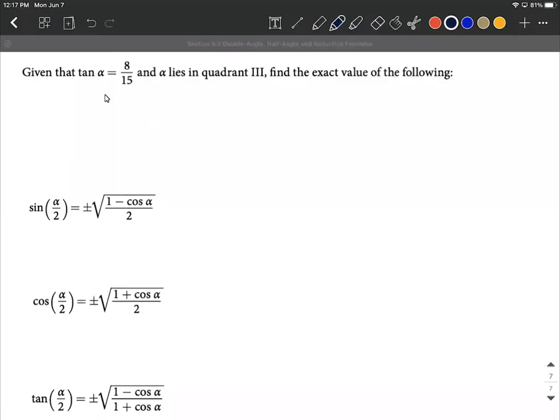Okay, on this example, we're given that tangent of alpha is 8 over 15, and that our angle alpha lies in the third quadrant. So our goal on this is to find the half angle for sine, cosine, and tangent based on this information.